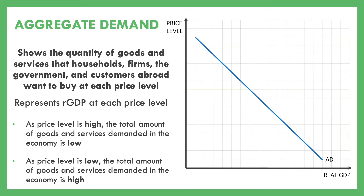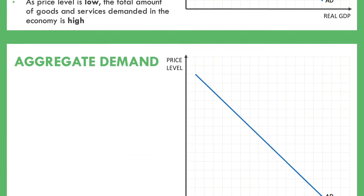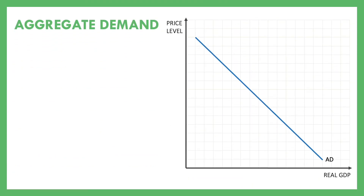Why is that? Suppose you have $100. When prices rise, your $100 doesn't buy you as many things anymore. In the same way, if everything gets cheaper, it now buys you more. So whenever the price level rises, total demand goes down because your money doesn't go as far. But whenever prices drop, your money goes further and you can buy more things, so total amount demanded increases.